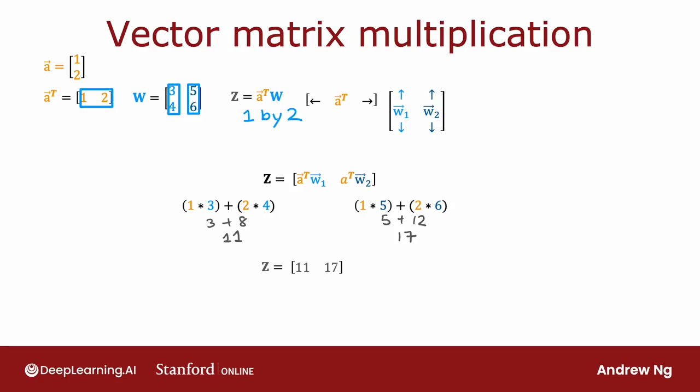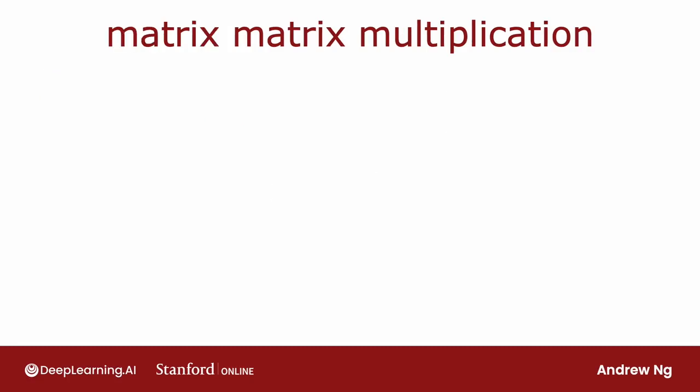Now let's generalize vector-matrix multiplication to matrix-matrix multiplication. I have a matrix A with four elements: the first column is 1, 2 and the second column is negative 1, negative 2. I want to compute A transpose times W. A is now a matrix rather than just a vector, but a matrix is just a set of different vectors stacked together in columns. So let's figure out what A transpose is — we take the columns of A and, similar to transposing a vector, lay them on the side one column at a time.